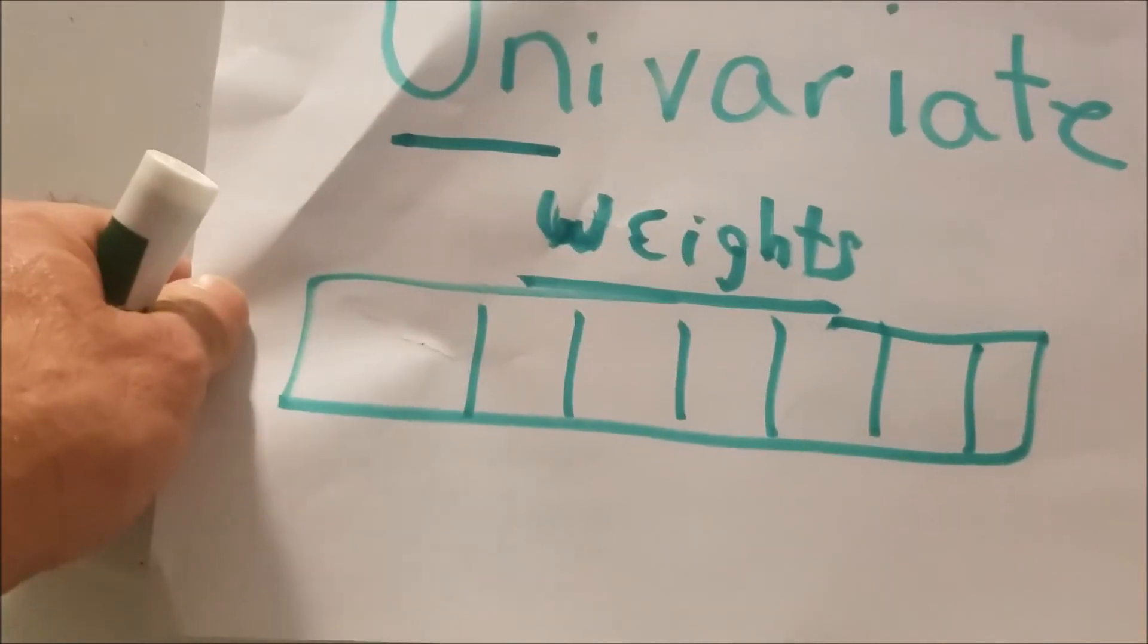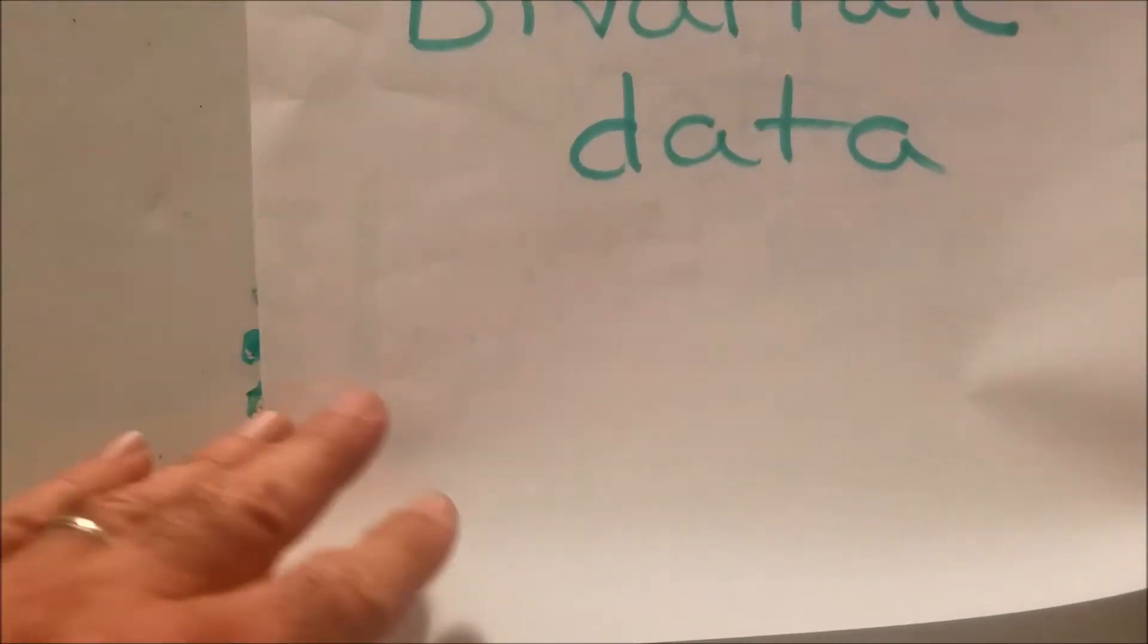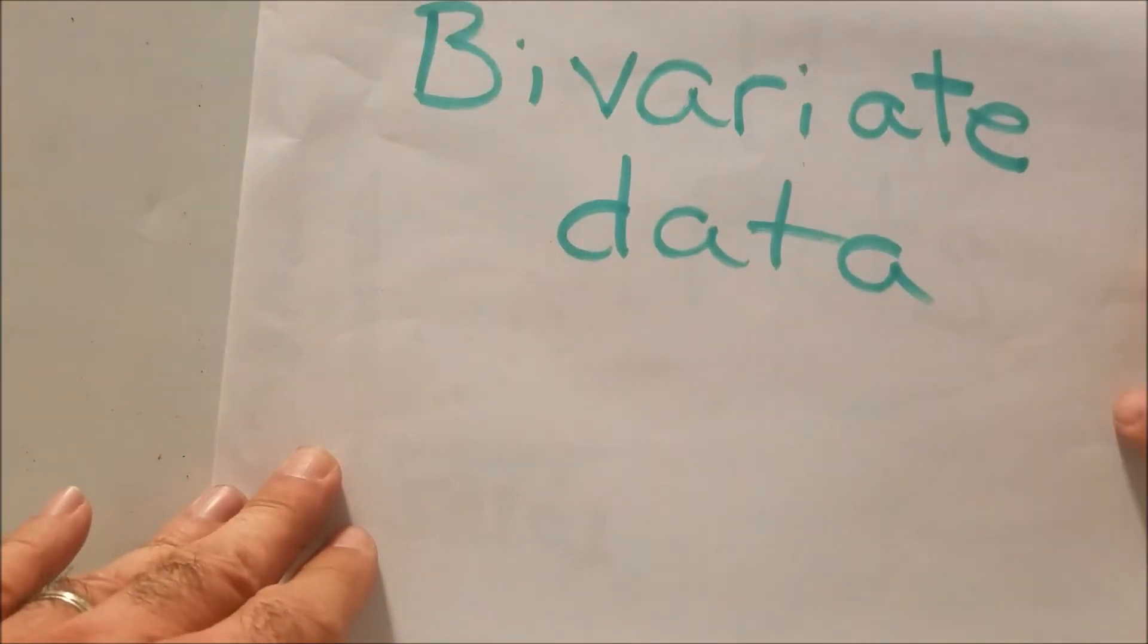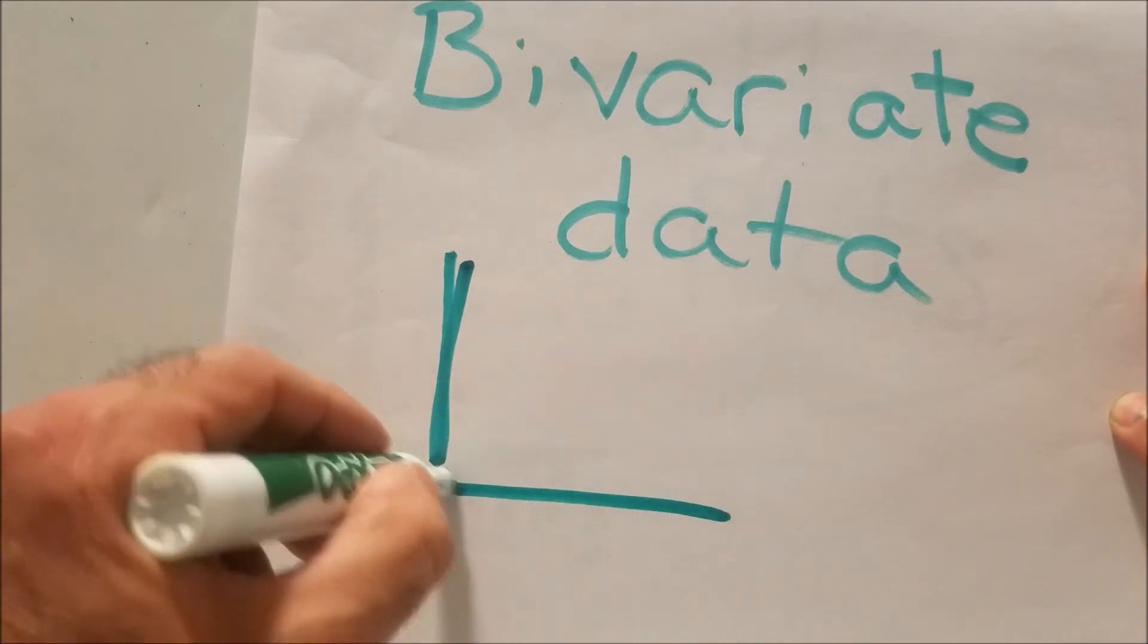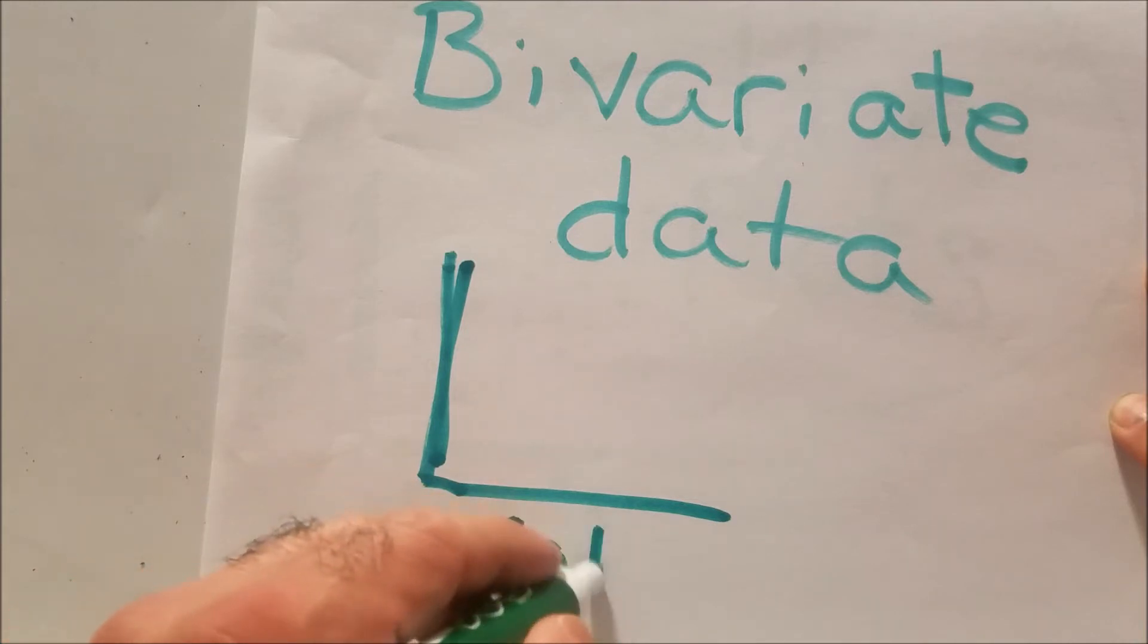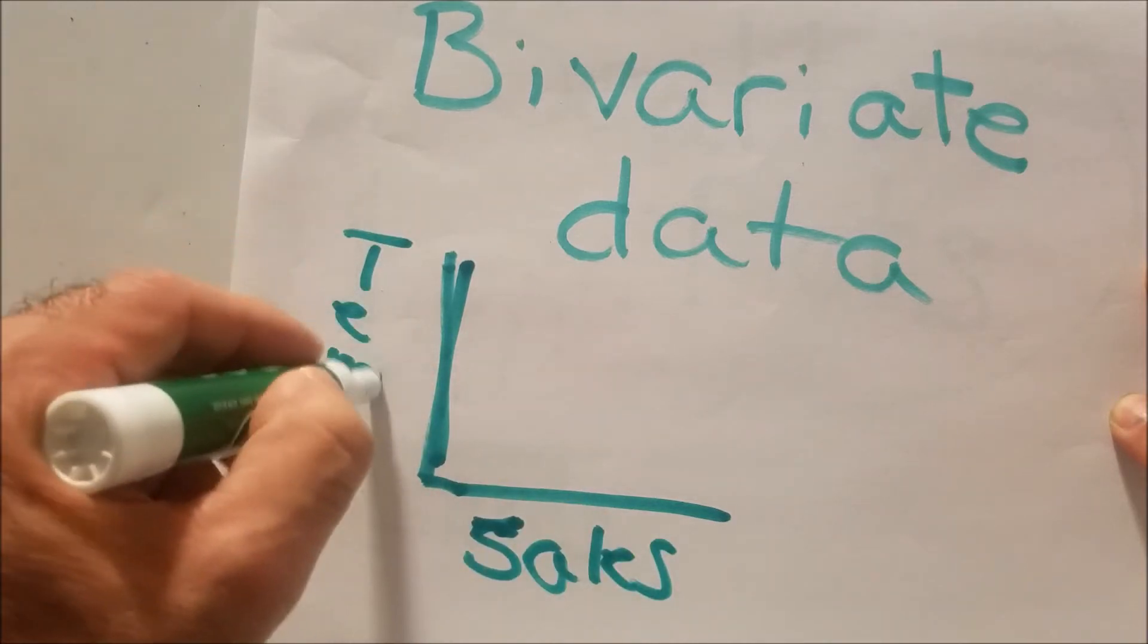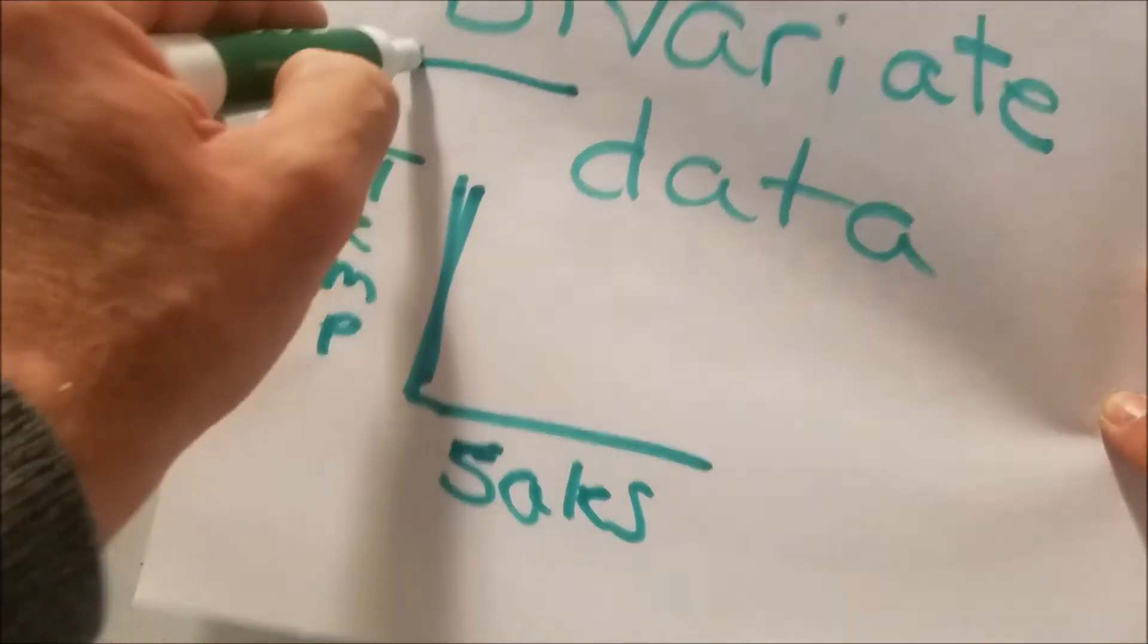So what do you think two would be? Well, two is bivariate. So bivariate data is when we're using two sets of data. We're using the X, meaning let's say the sales, how much you were selling, and the temperature. Ice cream sales, for example. That's bivariate.